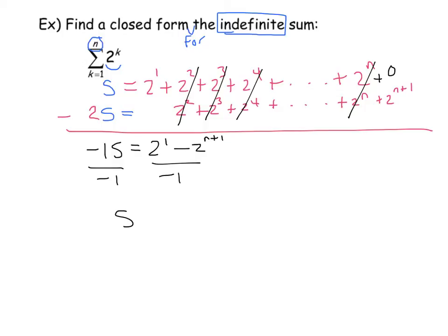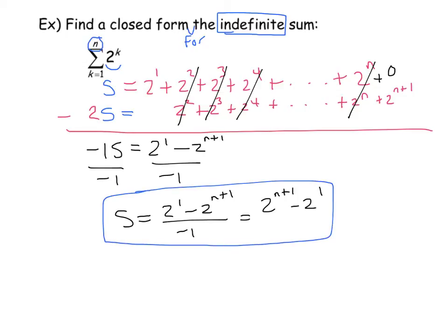Dividing by negative 1 as we usually do, I get this. This is a closed form for this indefinite sum: k goes from 1 to n of 2 to the k.